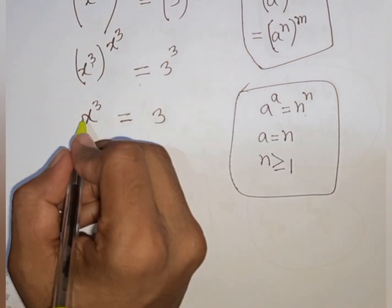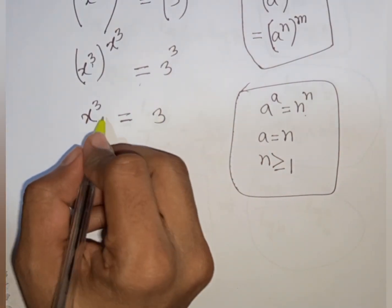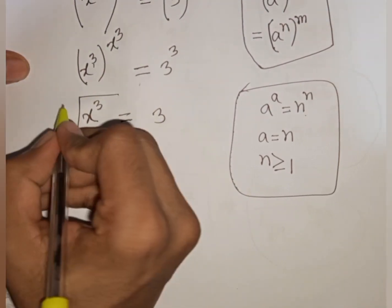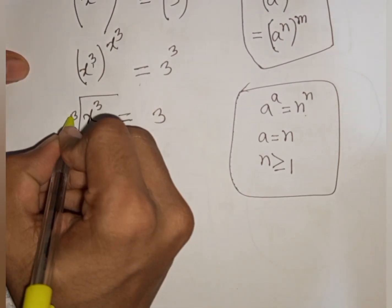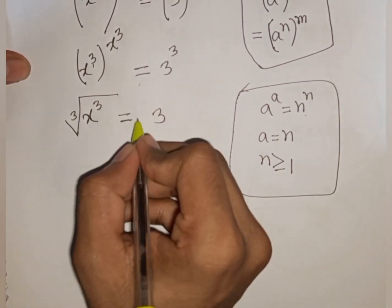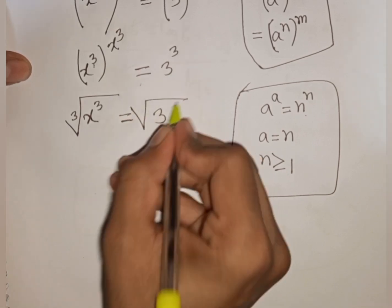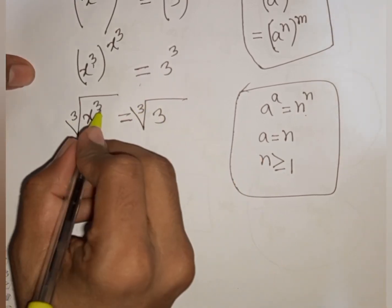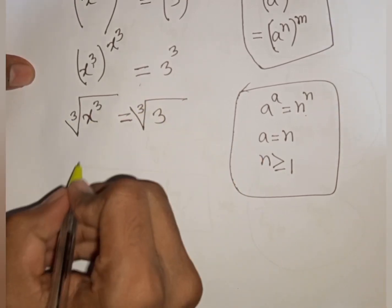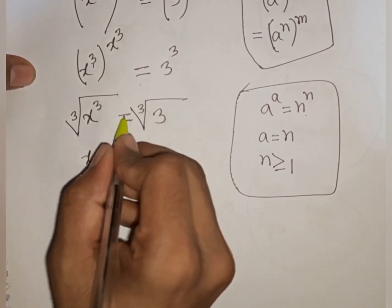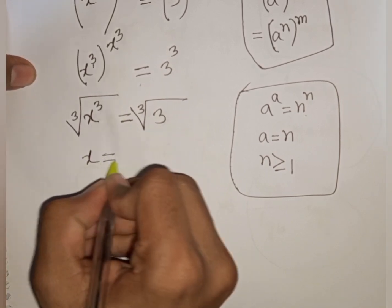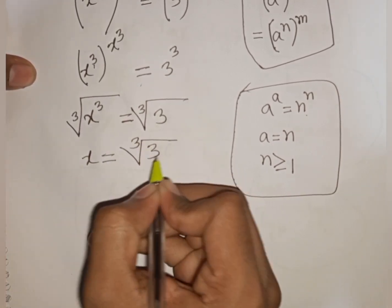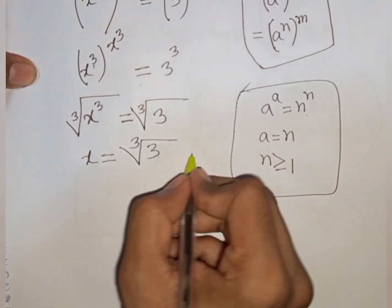Now we need the value of x, so we apply the cube root to both sides. The cube root of x cubed equals the cube root of 3. The cube root and power 3 cancel, so x is equal to the cube root of 3. This is the value of x and our final answer.